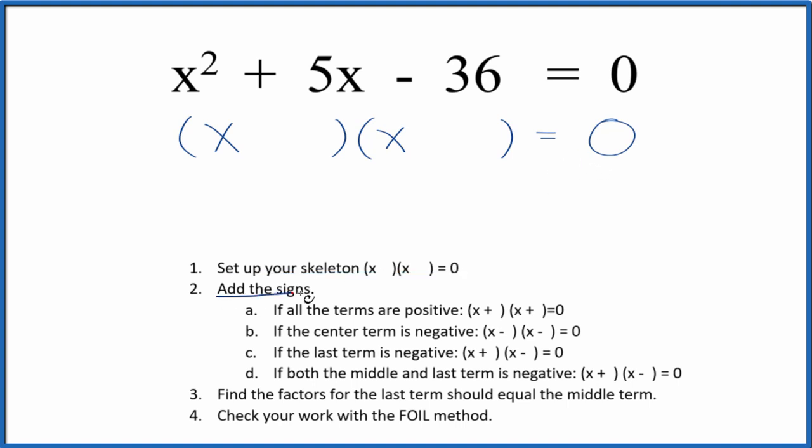Next, we're going to add the signs to our skeleton equation. In this case, we have a positive and then a negative, so the last term is negative. I'm going to put a positive and negative in my skeleton equation like this here.